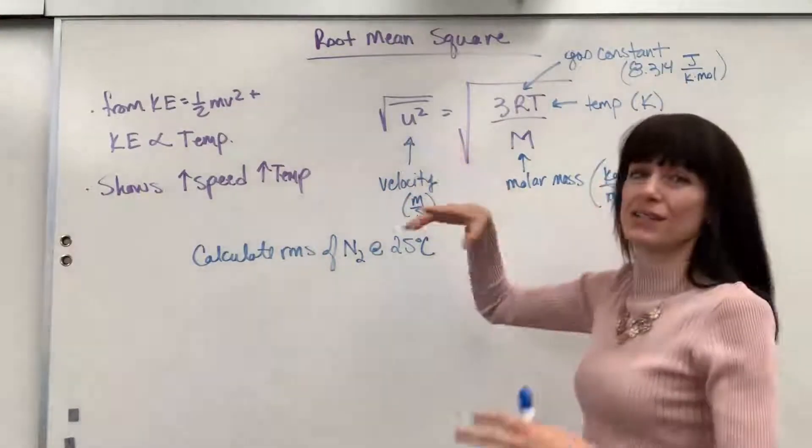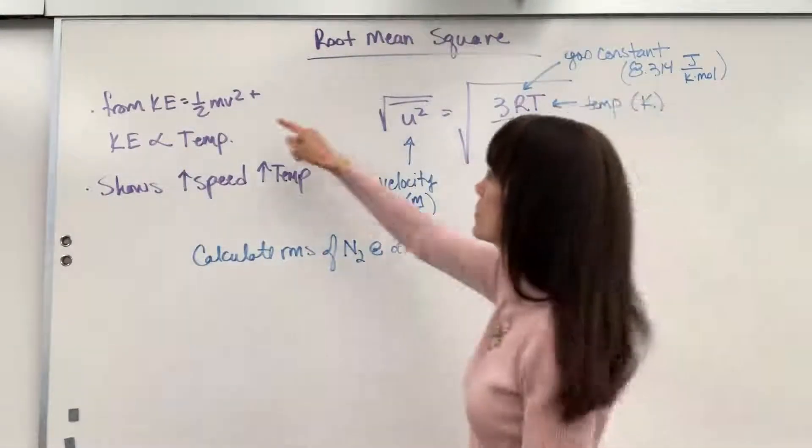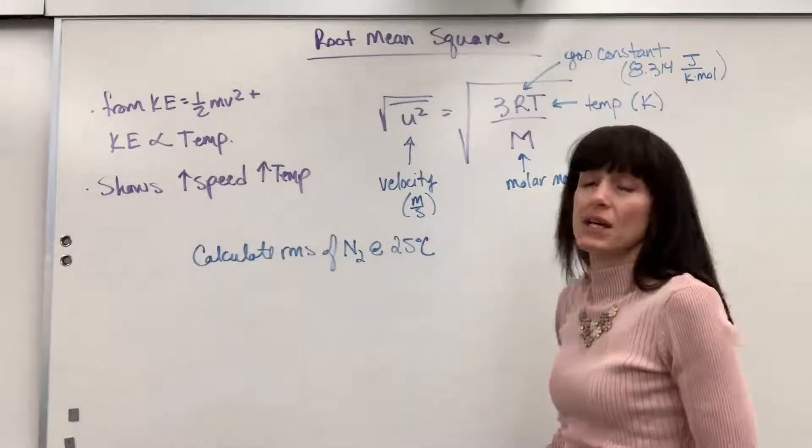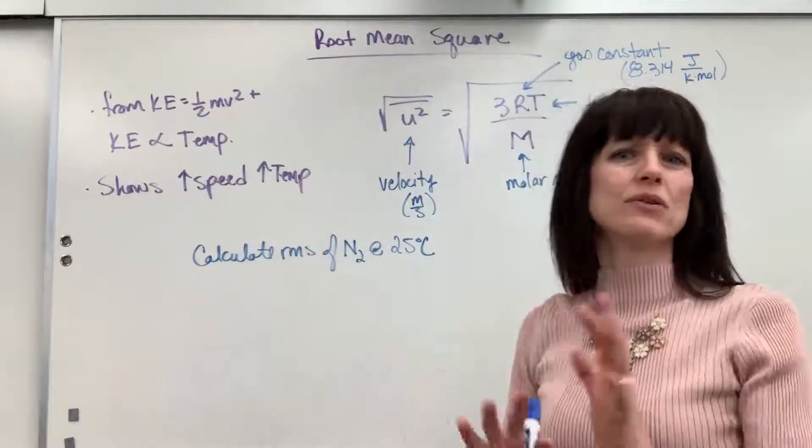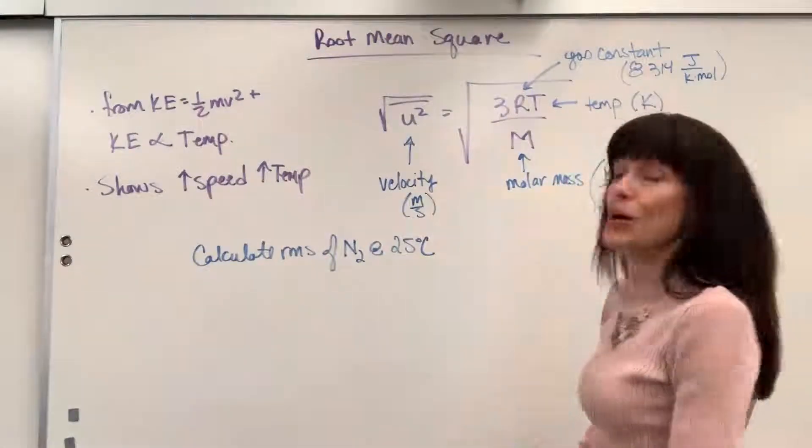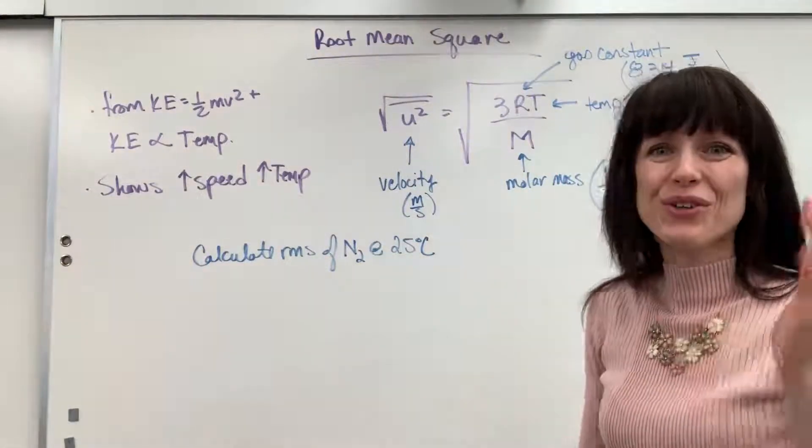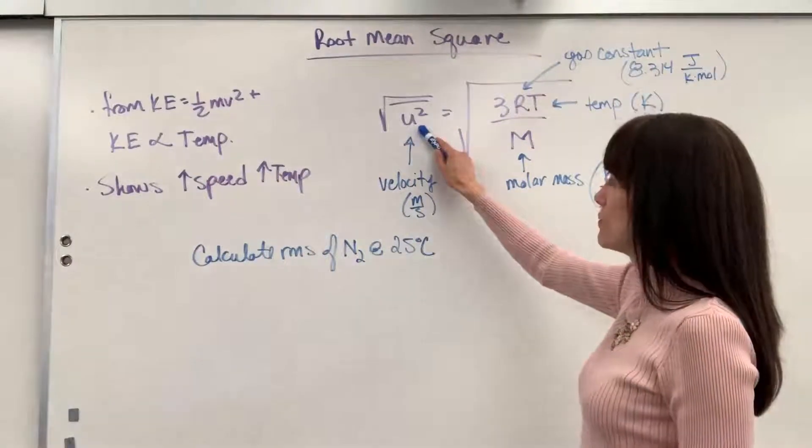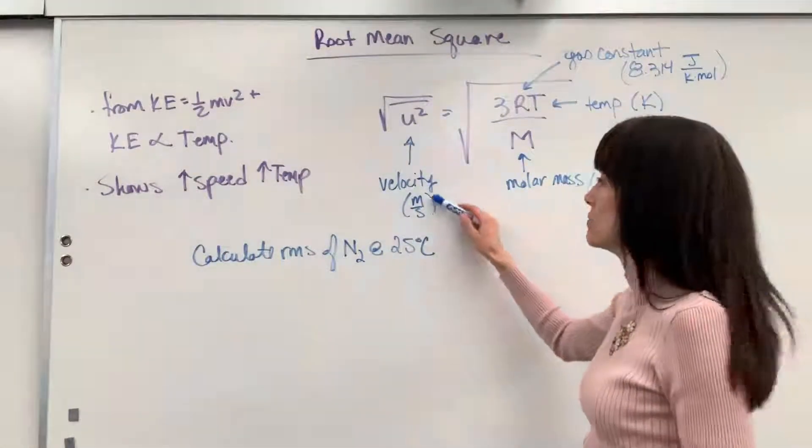So this u is actually just velocity. It's what we would do here as our v. And the unit on that is meters per second. Again, why they use the u instead of the v, I don't know. I don't know why that is. But we'll roll with it. You'll know root mean square means speed. So this is going to be finding speed, velocity meters per second.